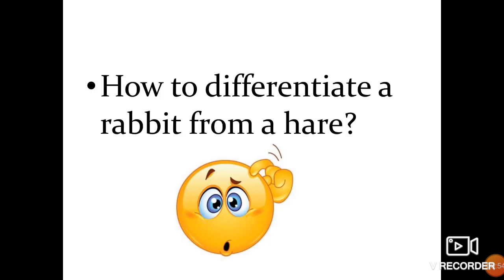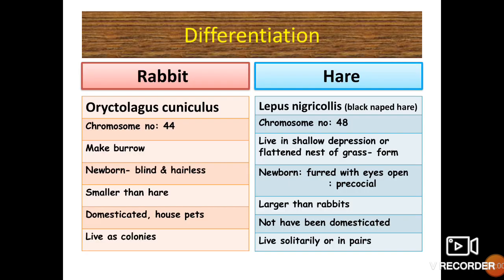We all might have the confusion or doubt: how to differentiate a rabbit from a hare? Here are the differences. Rabbit is Oryctolagus cuniculus with 44 chromosomes. The hare is Lepus nigricollis and the chromosome number is 48. Rabbits make burrows; hares live in a shallow depression or flattened nest of grass called a form.